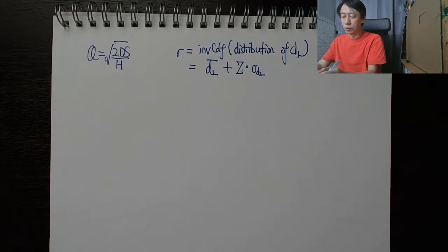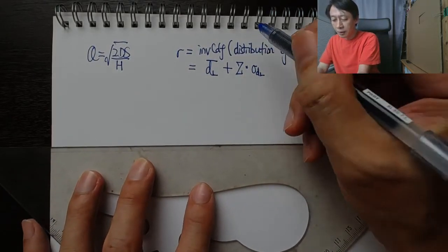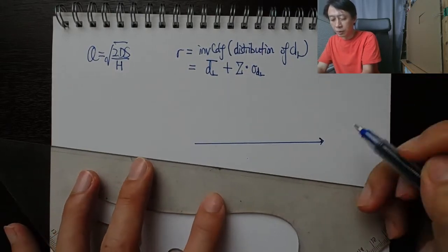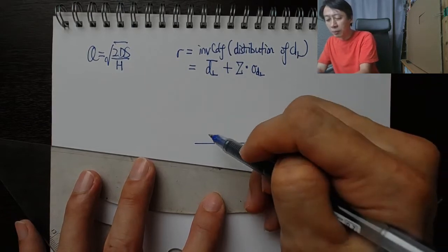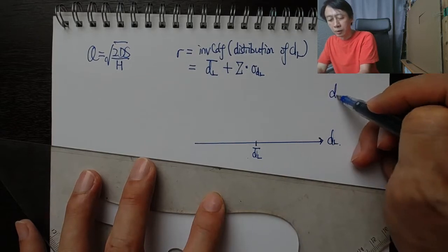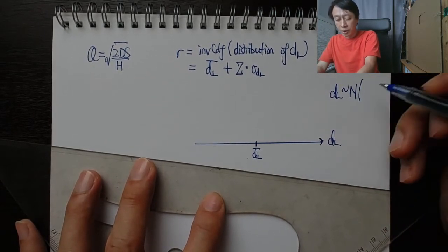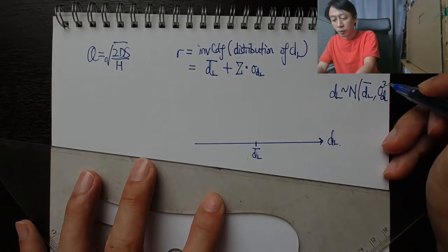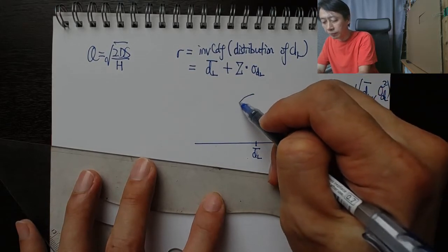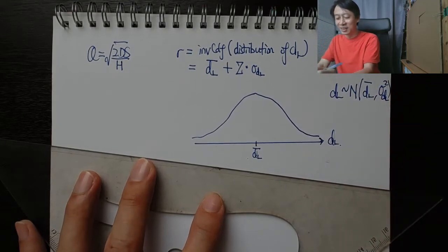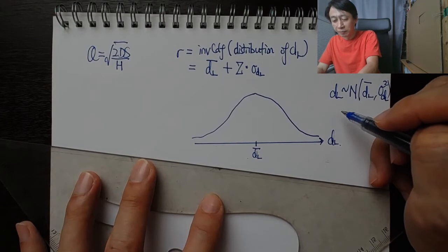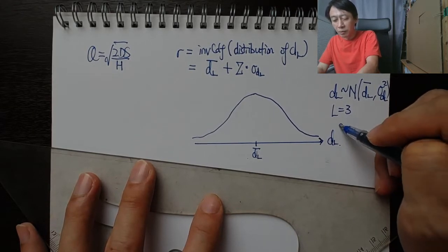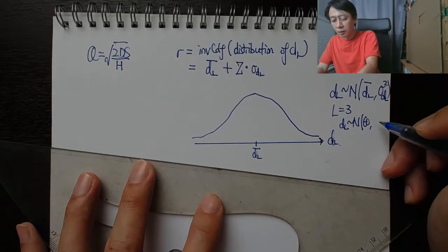That basically is the formula, and what we want to do from here is to understand the reorder point formula a little bit more in terms of its components. So we have demand during lead time, if the demand fluctuates normally distributed with a mean of dL bar and a standard deviation of sigma dL squared.